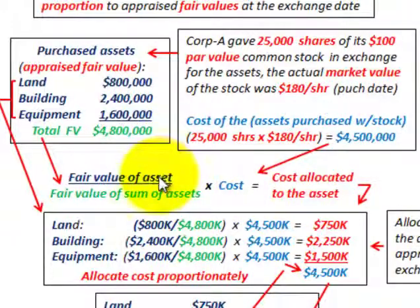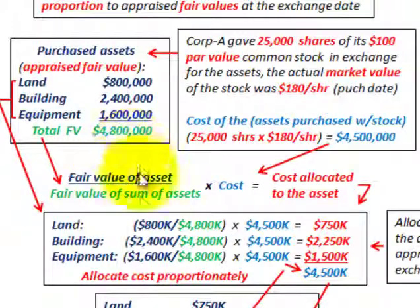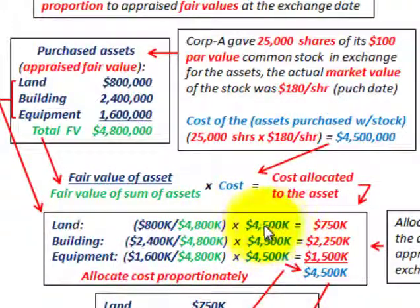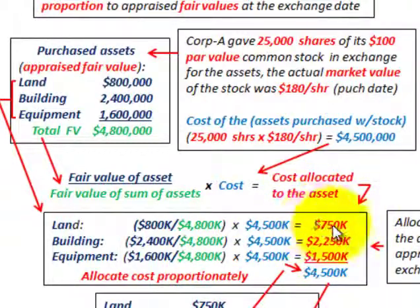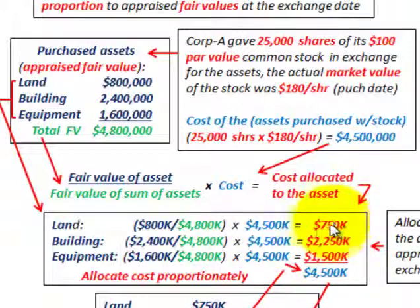Going through our equation for land: we take the land's appraised value of $800,000, divide by the total fair value of $4,800,000, and multiply that fraction times the total cost of $4,500,000. That gives us a cost allocated to land of $750,000. So although the appraised value was $800,000, the allocated cost is $750,000.